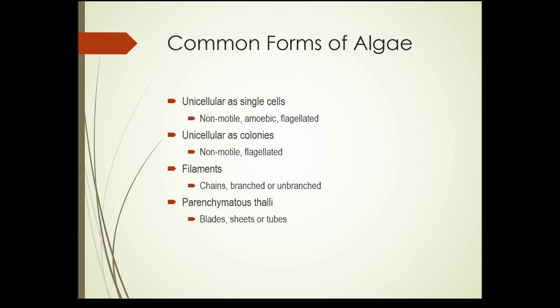Algae have different forms in which they grow. Unicellular algae exist as single cells, each individual cell floating around separate from others. These can be non-motile — meaning they can't move on their own, just floating with the current. They can be amoebic, with flexible cell walls that allow flowing movement in different directions. Or they can be flagellated, having one or more tails they use to swim or move through their substrate.